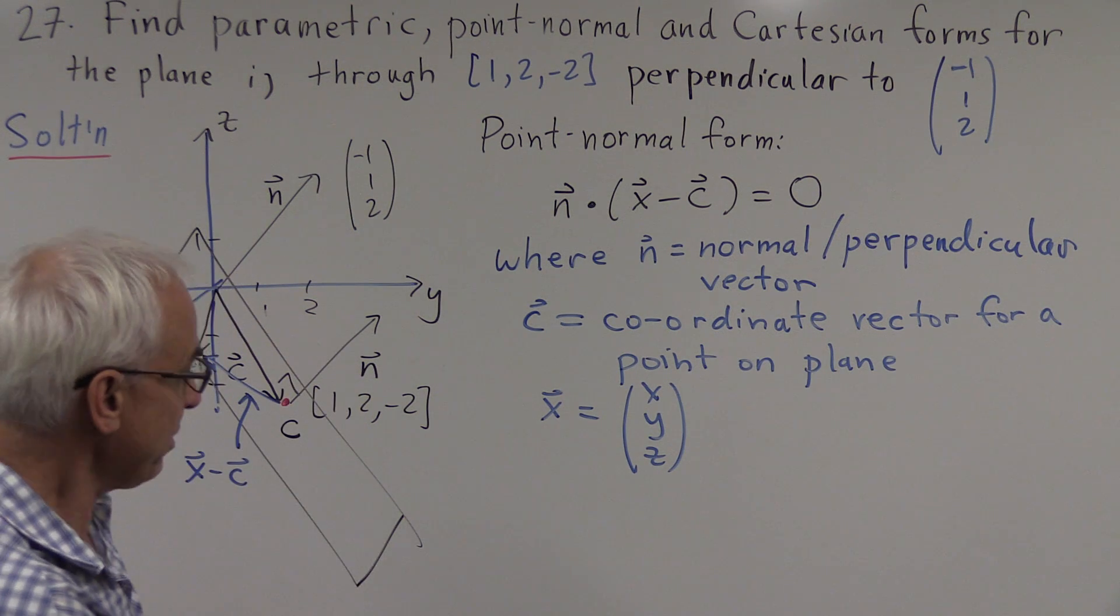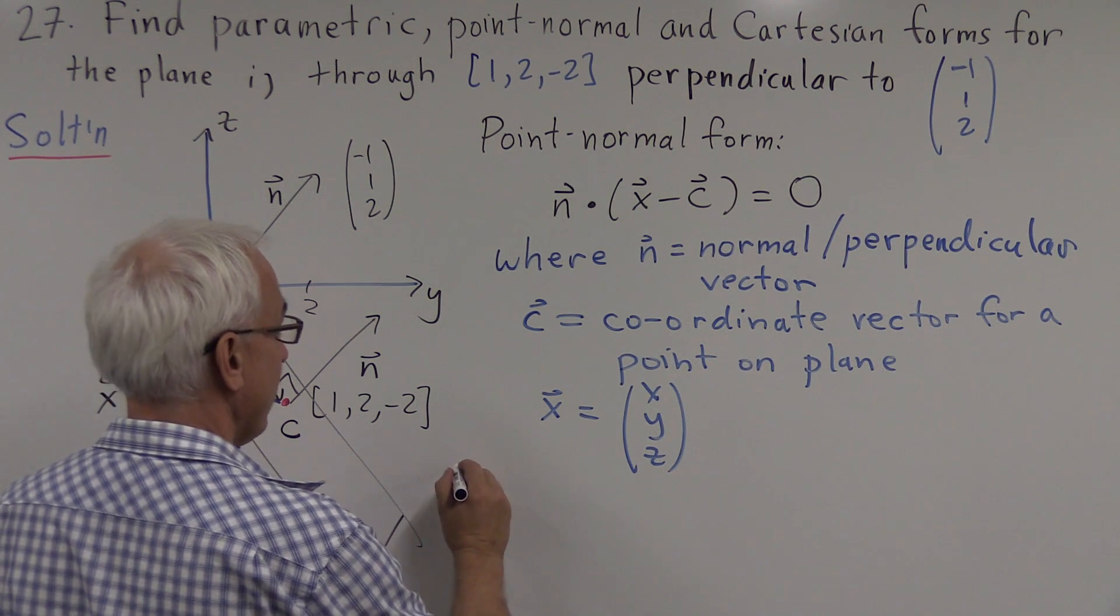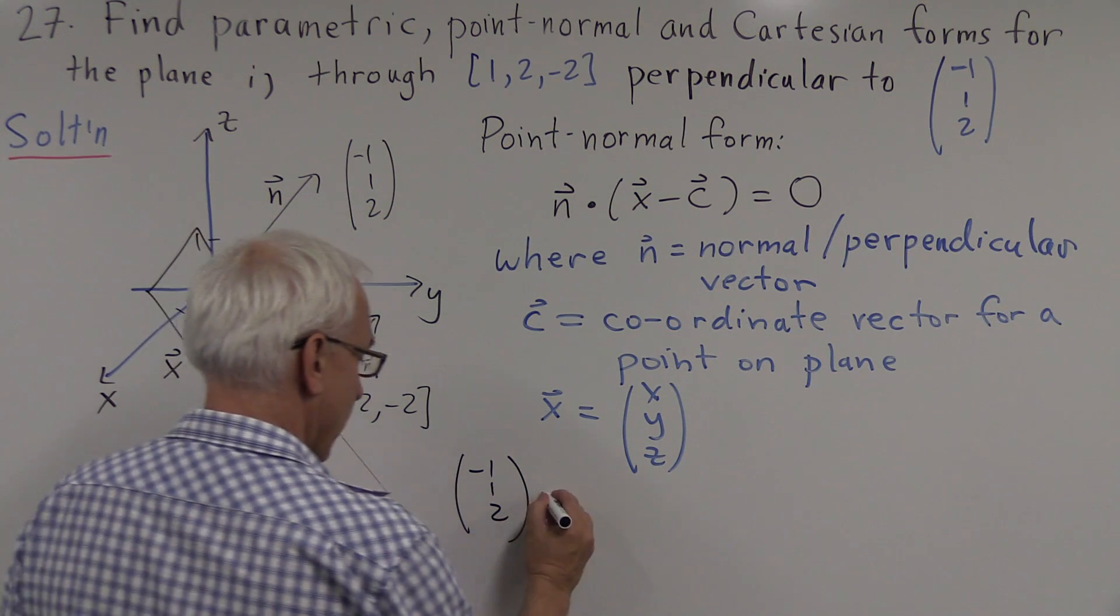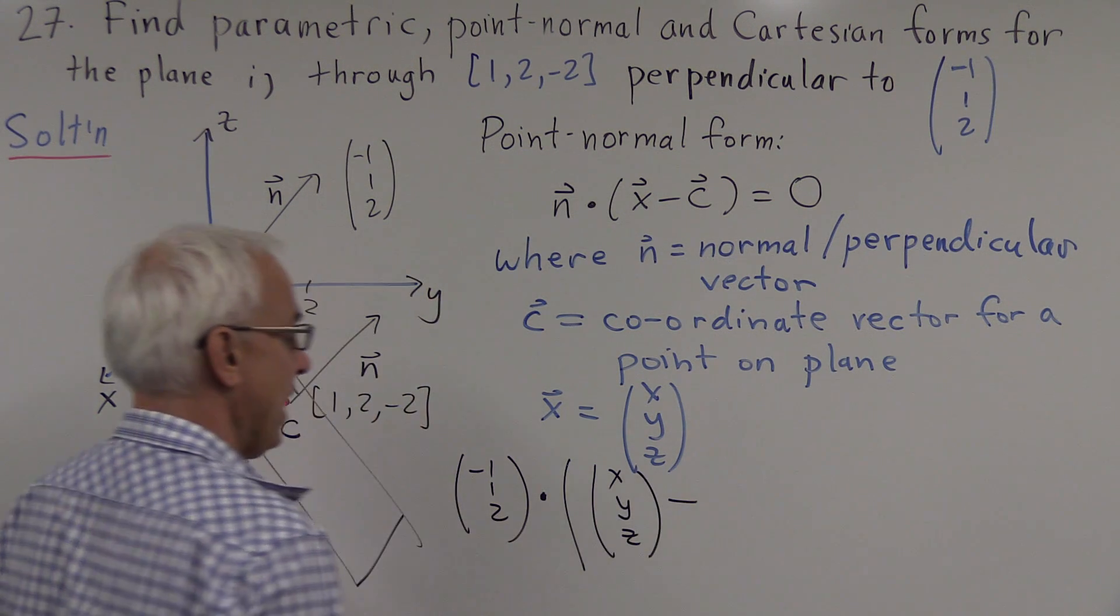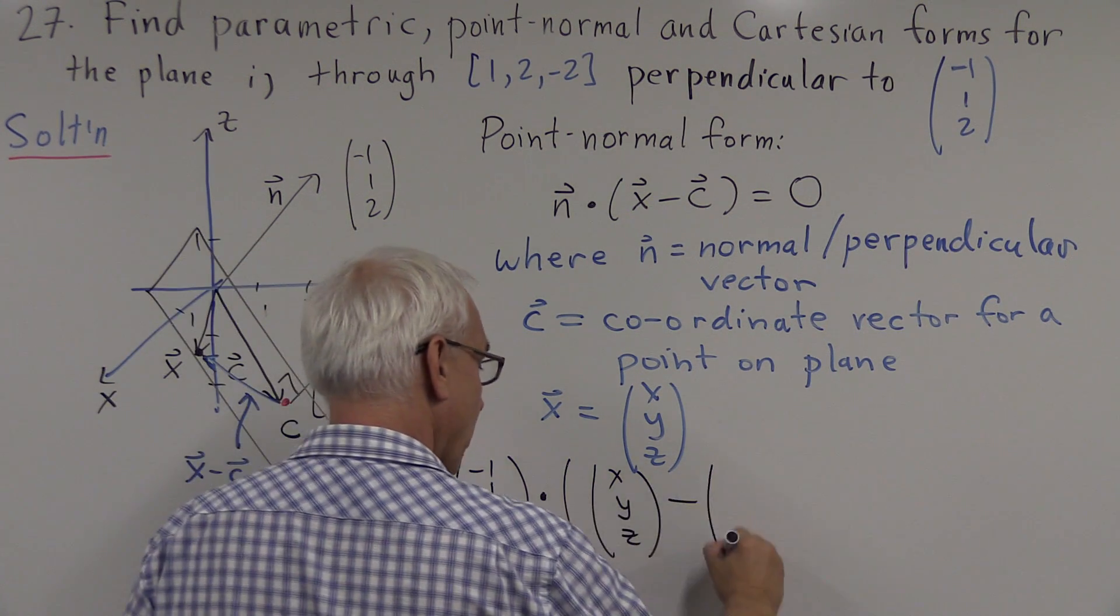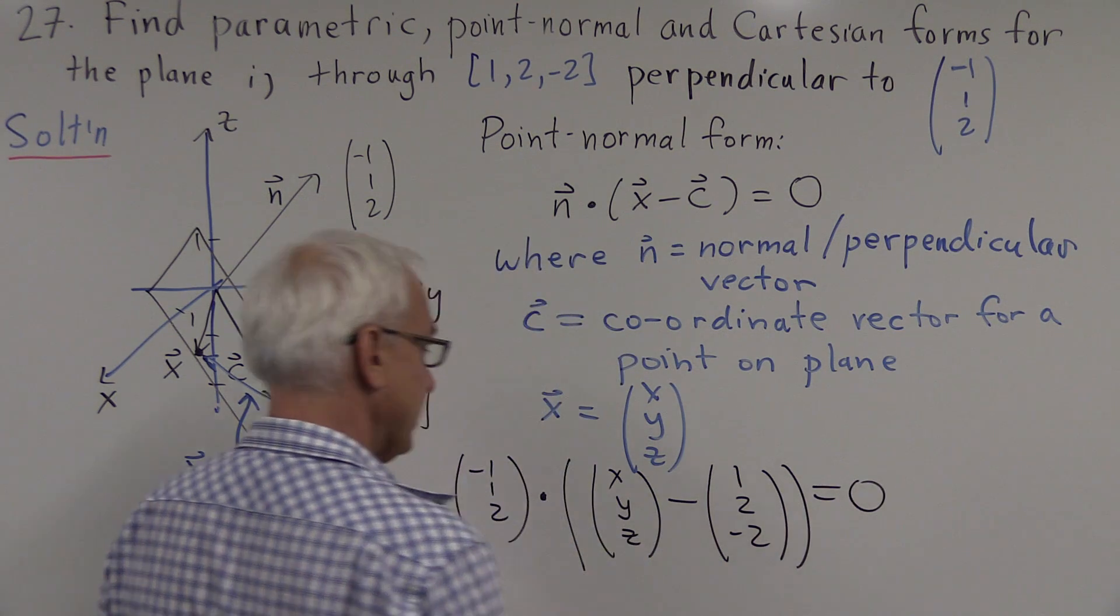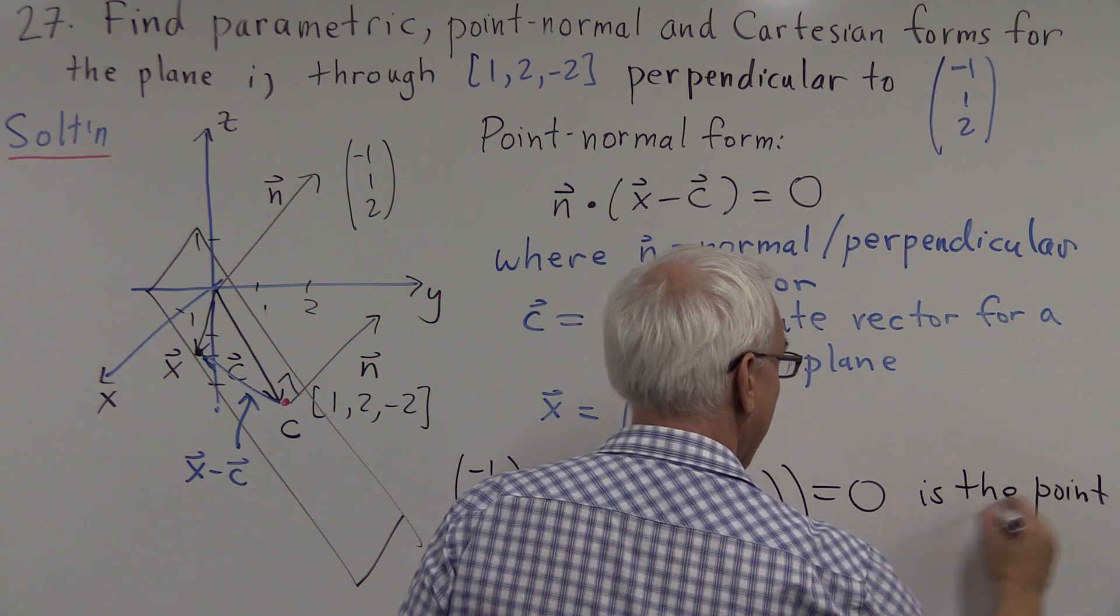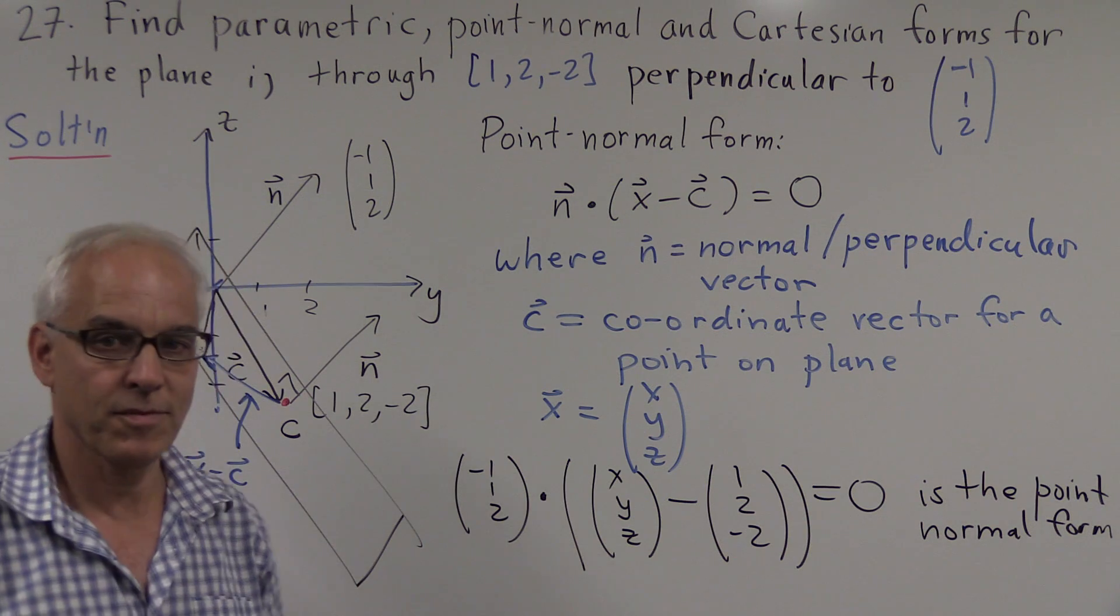Okay, so in our situation, the solution is n is the vector (-1,1,2), the vector x is the vector (x,y,z), and the point c is the point (1,2,-2). So its coordinate vector is the vector (1,2,-2). All of that equal to zero. This is the point-normal form for the plane.